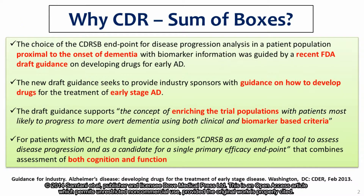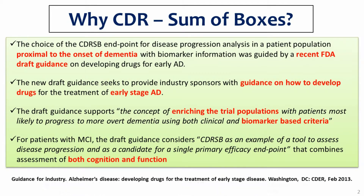The choice of the CDRSB endpoint for disease progression analysis in a patient population close to the onset of dementia was guided by a recent FDA draft guidance on developing drugs for early Alzheimer's disease. The draft guidance supports the concept of enriching clinical trials with patients most likely to progress to more overt dementia using both clinical and biomarker-based criteria.